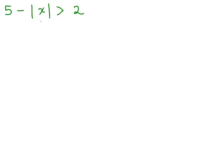So here we have five minus the absolute value of x is greater than two. The first thing we want to do is isolate the absolute value sign. So I want to get rid of this minus 5 — I'm going to subtract 5 from both sides of the inequality. And when you do that, be careful — you have a minus sign in front of that absolute value sign. So I have negative absolute value of x is greater than, and 2 minus 5 is negative 3.